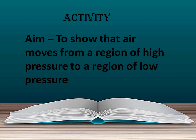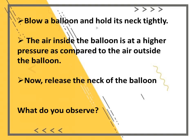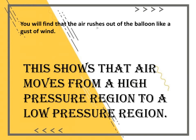Let's perform another activity to show that air moves from a region of high pressure to a region of low pressure. Blow up a balloon and hold its neck tightly. The air inside the balloon is at a higher pressure compared to the air outside. Now release the neck of the balloon. You will find that the air rushes out like a gust of wind. This shows that air moves from a high pressure region to a low pressure region.